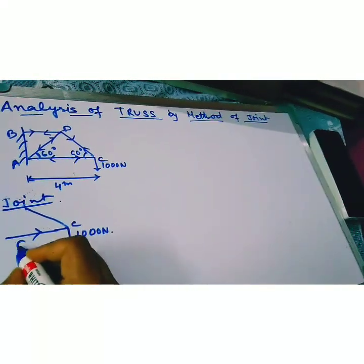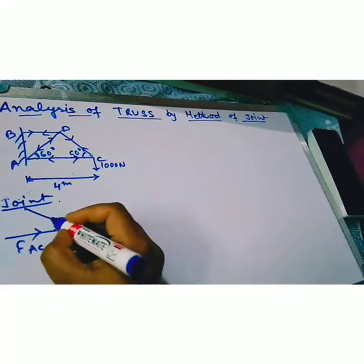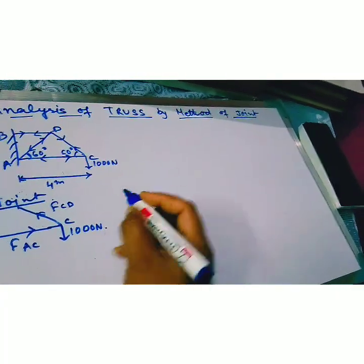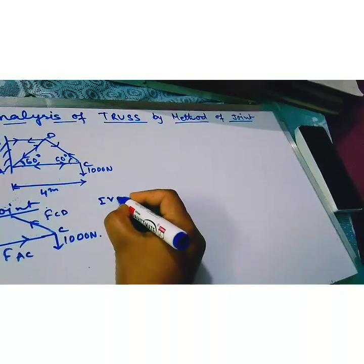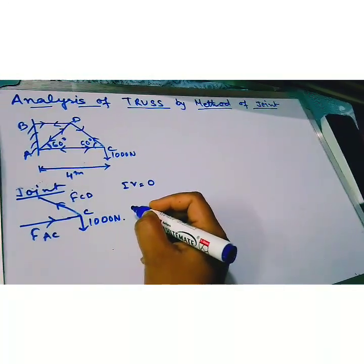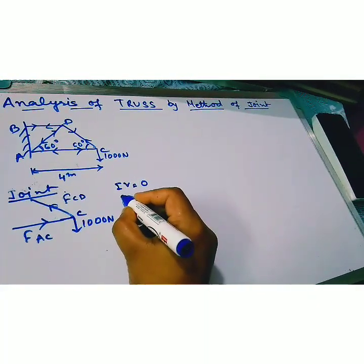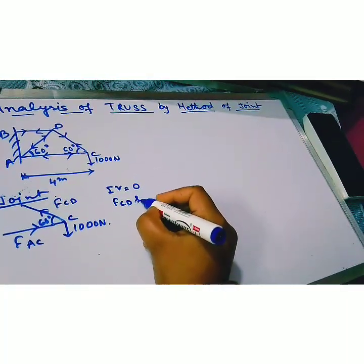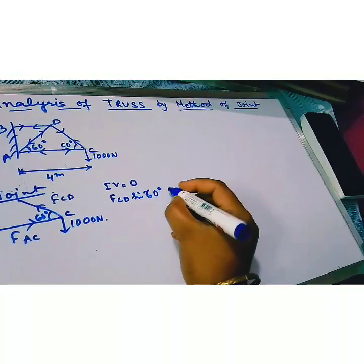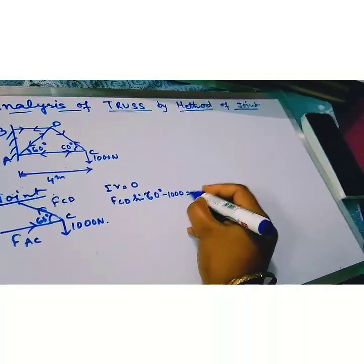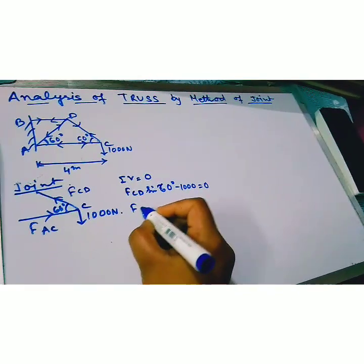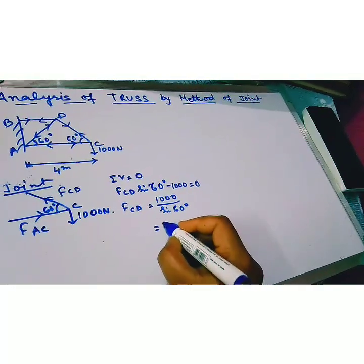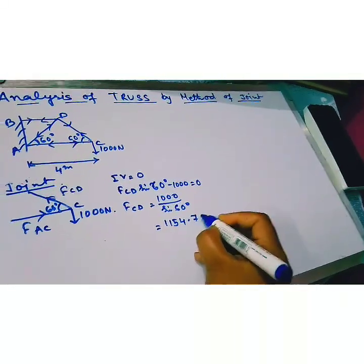The force FAC is compression assume and FCD is tension. So the equilibrium equation summation of vertical force equal to 0. So FCD sin 60 degree minus 1000 equal to 0. So FCD equal to 1000 by sin 60 degree equal to 1154.7 newton.